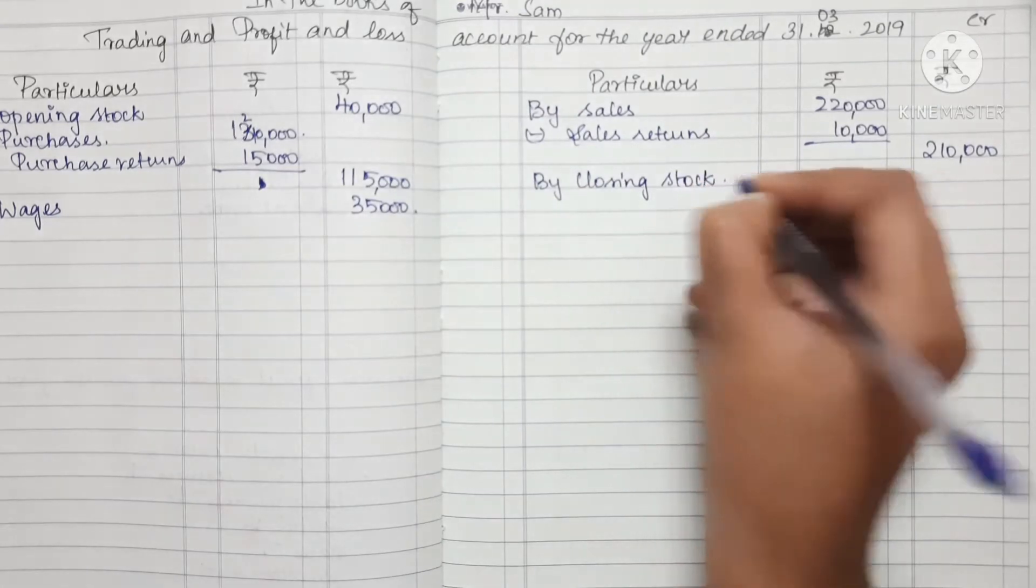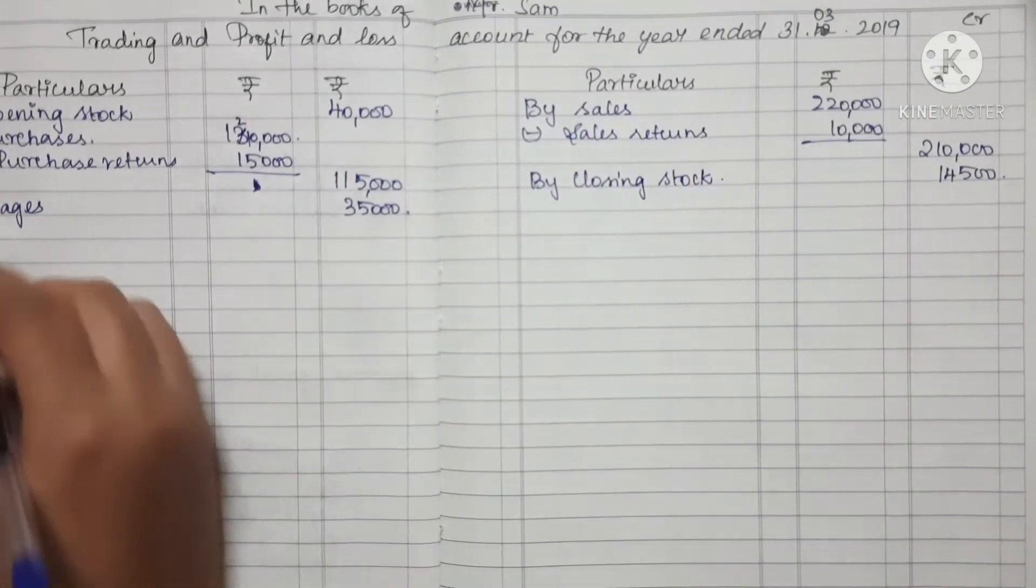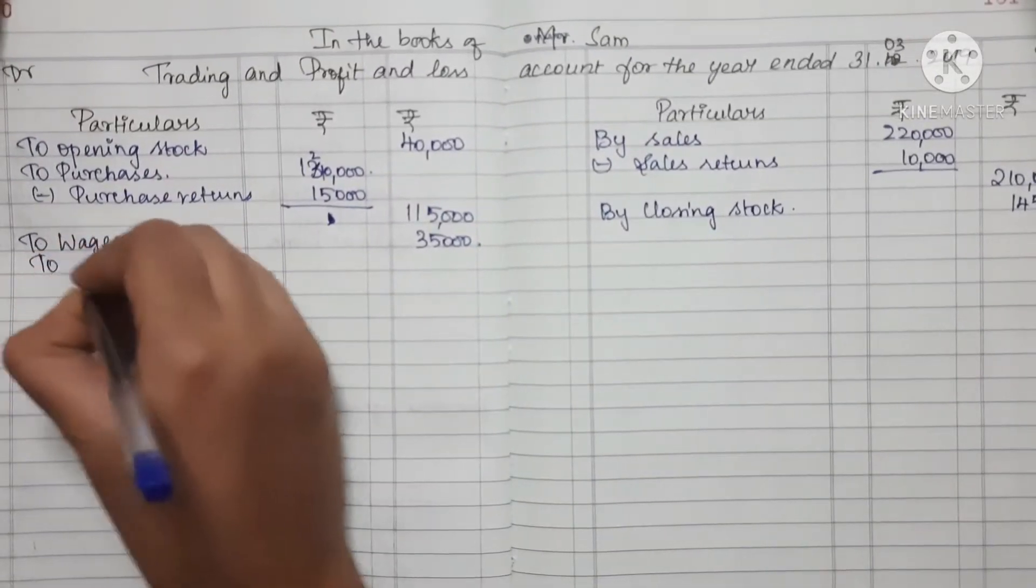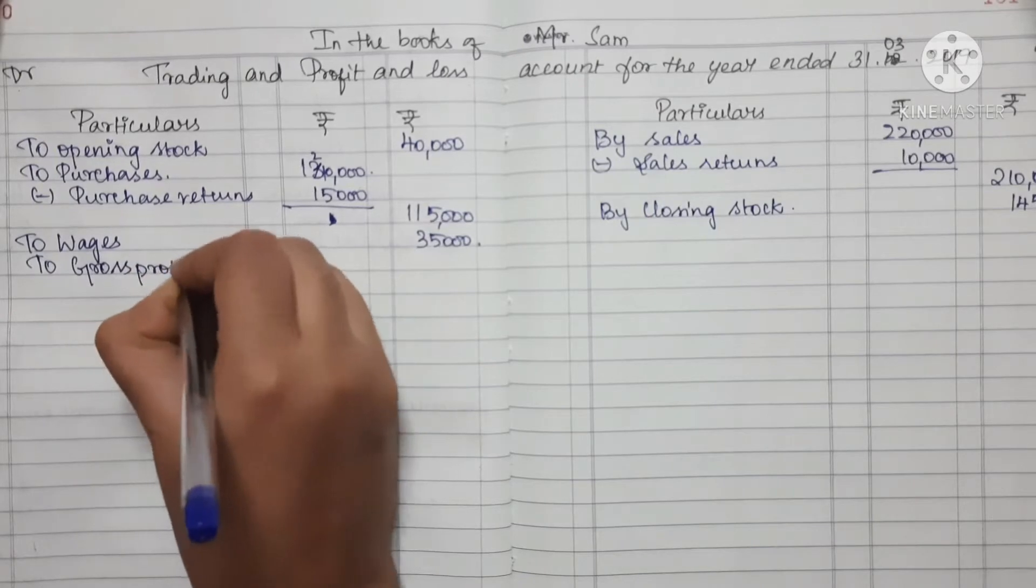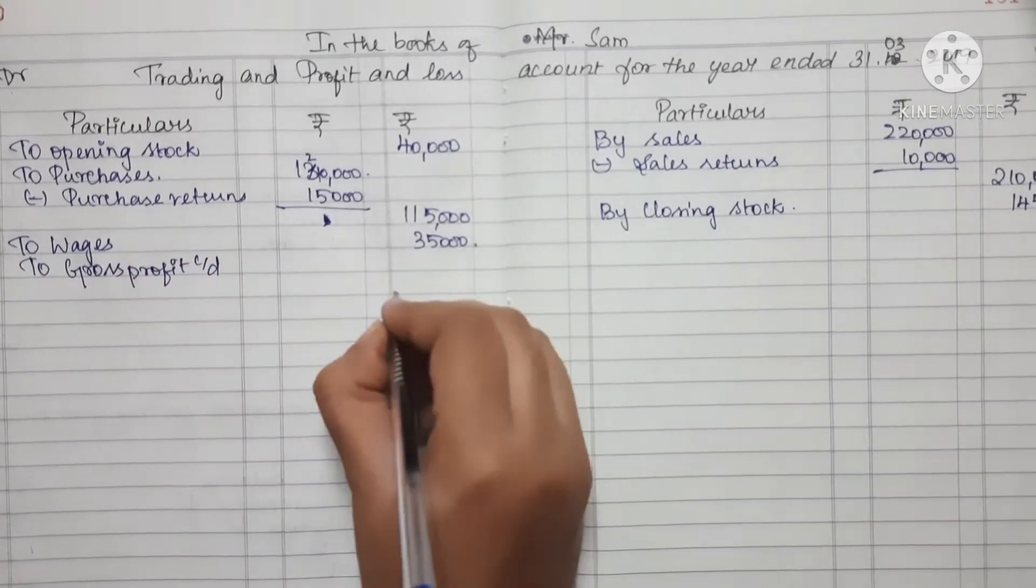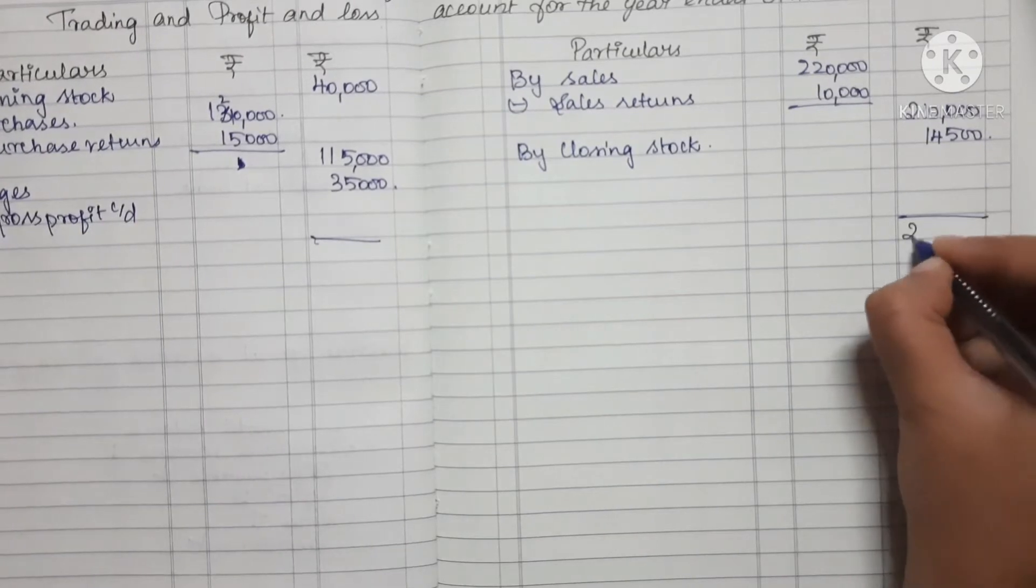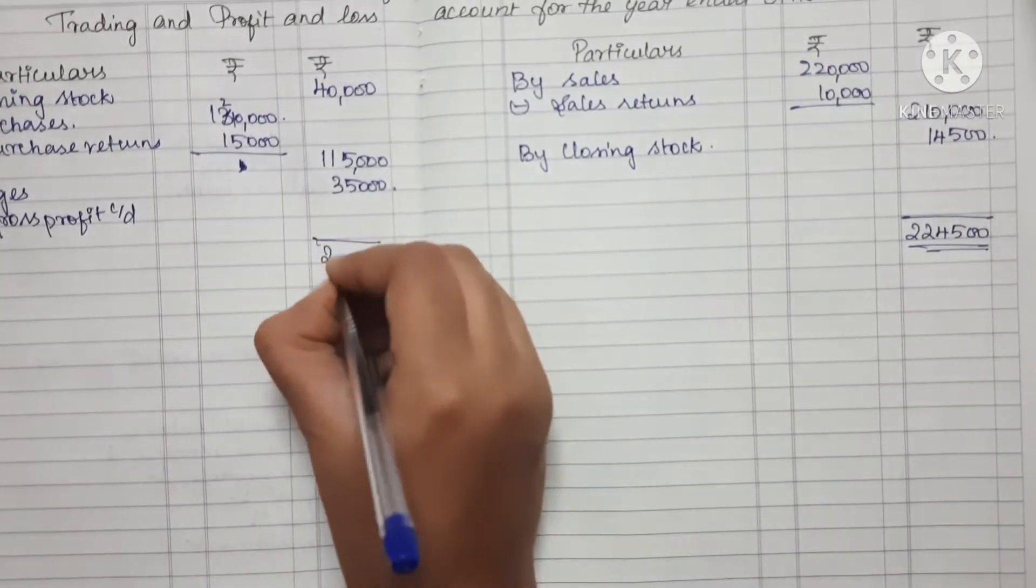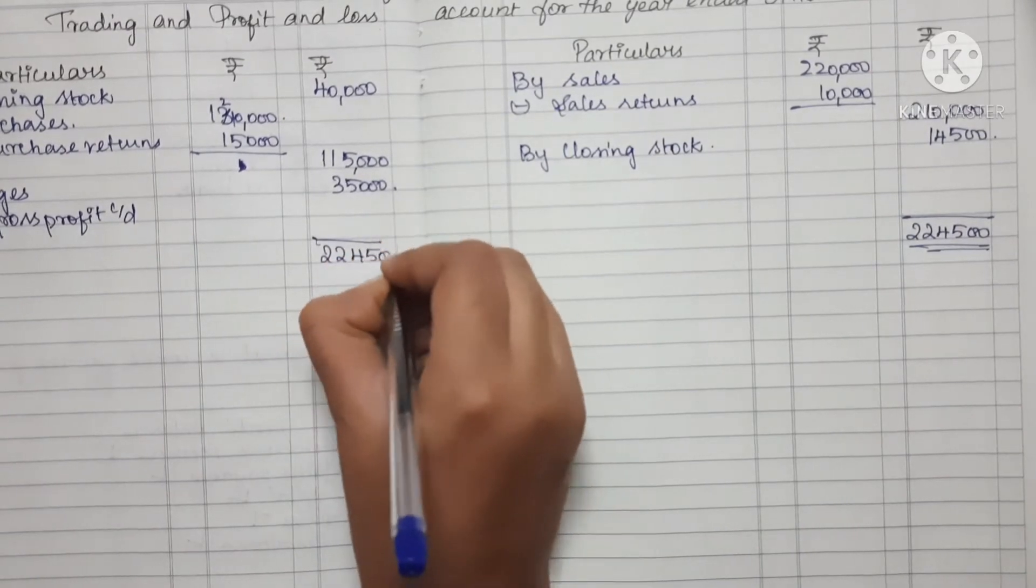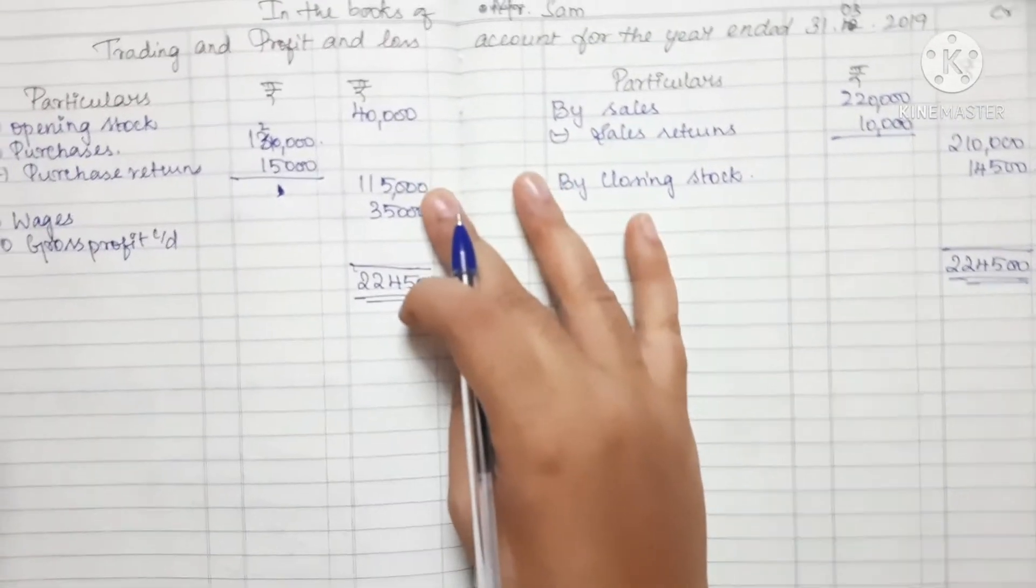Next, Closing Stock: the closing stock amount is 14,500. So the total on credit side is 2,24,500.